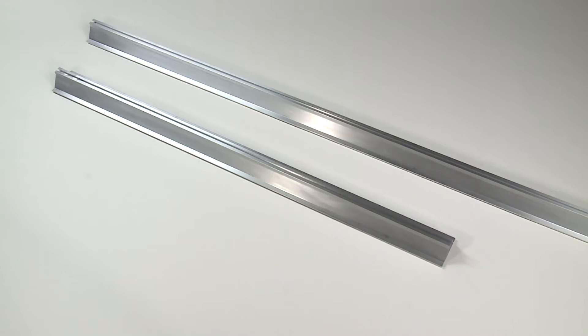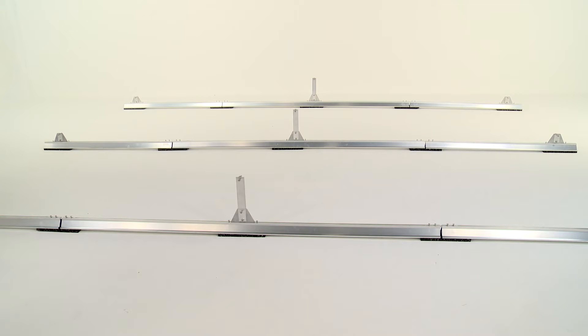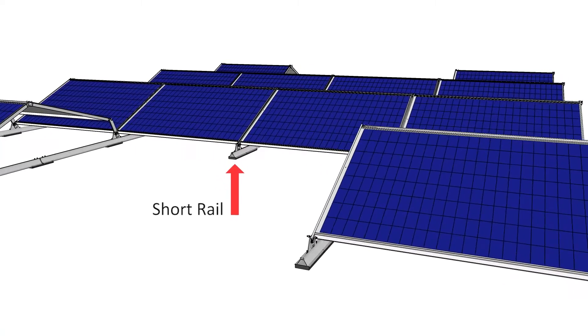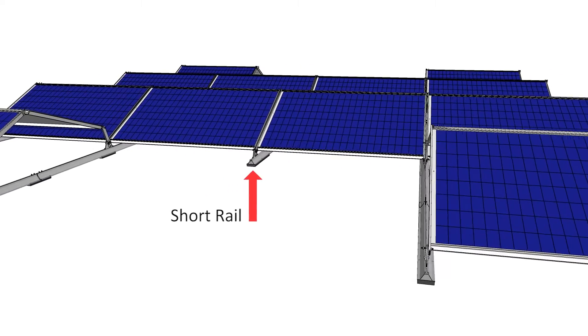You will receive two different length rails with your shipment: one approximately 102 inches long and the other approximately 57 inches long. The short rails will be used on the front or south and the back or north edges of the array, but may also be used in the interior of an array as it flows around roof obstructions.